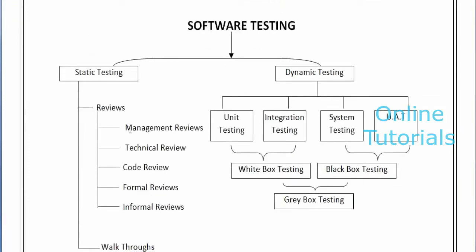There are management reviews, technical reviews, and types of reviews. Reviewing means nothing but cross-checking a particular activity — whatever it may be. Reviews are further divided into management reviews, technical reviews, code reviews, formal reviews, and informal reviews.